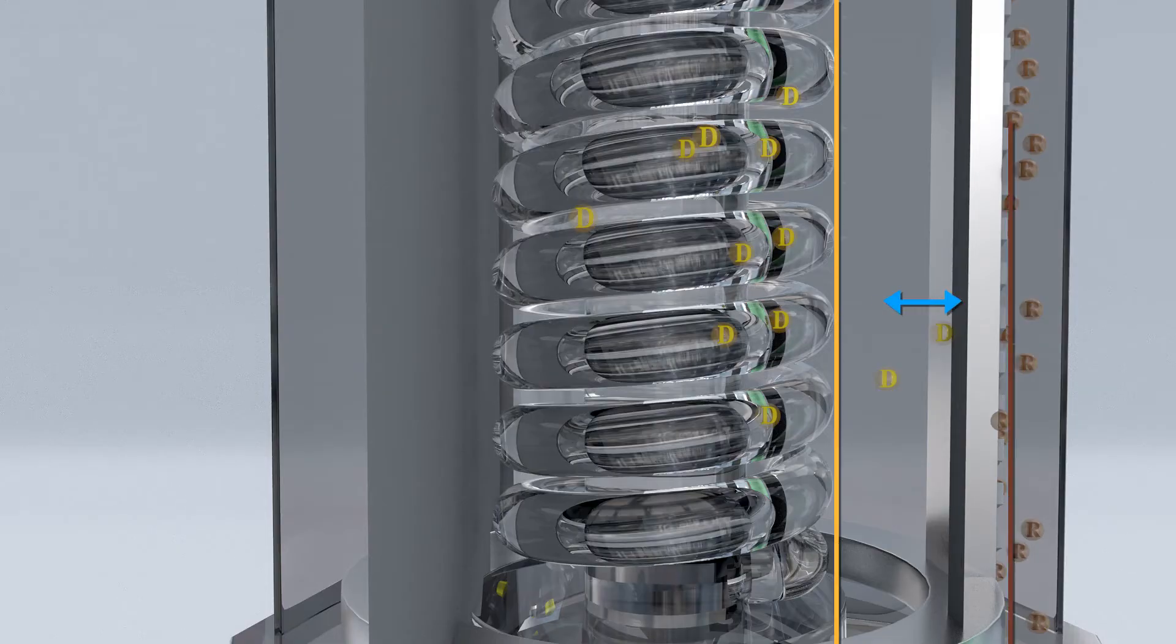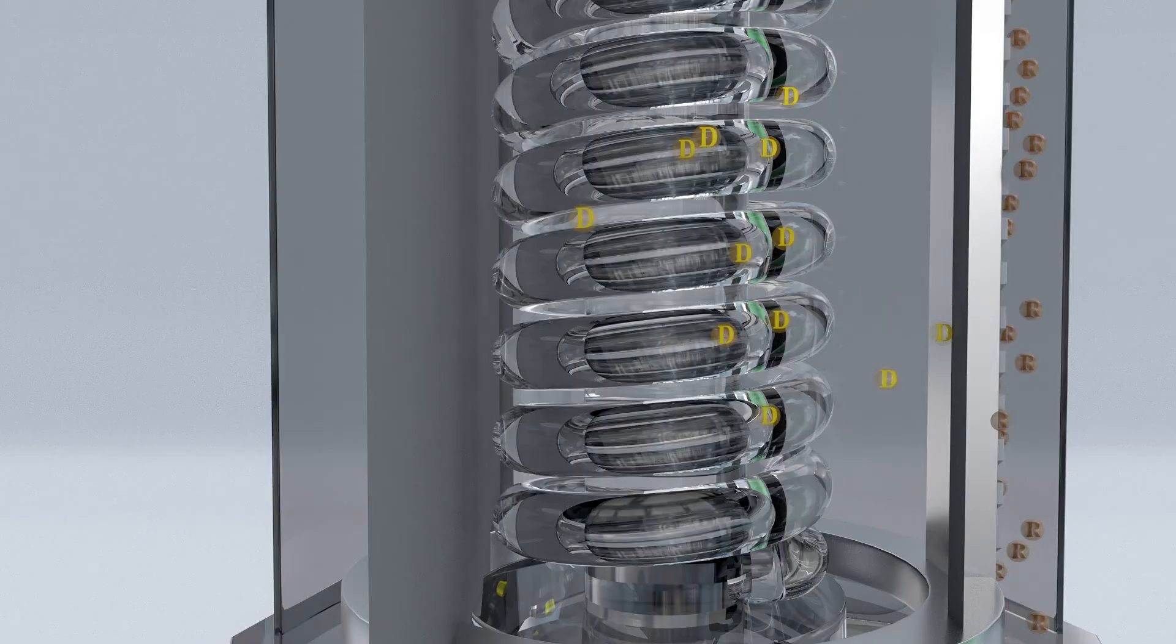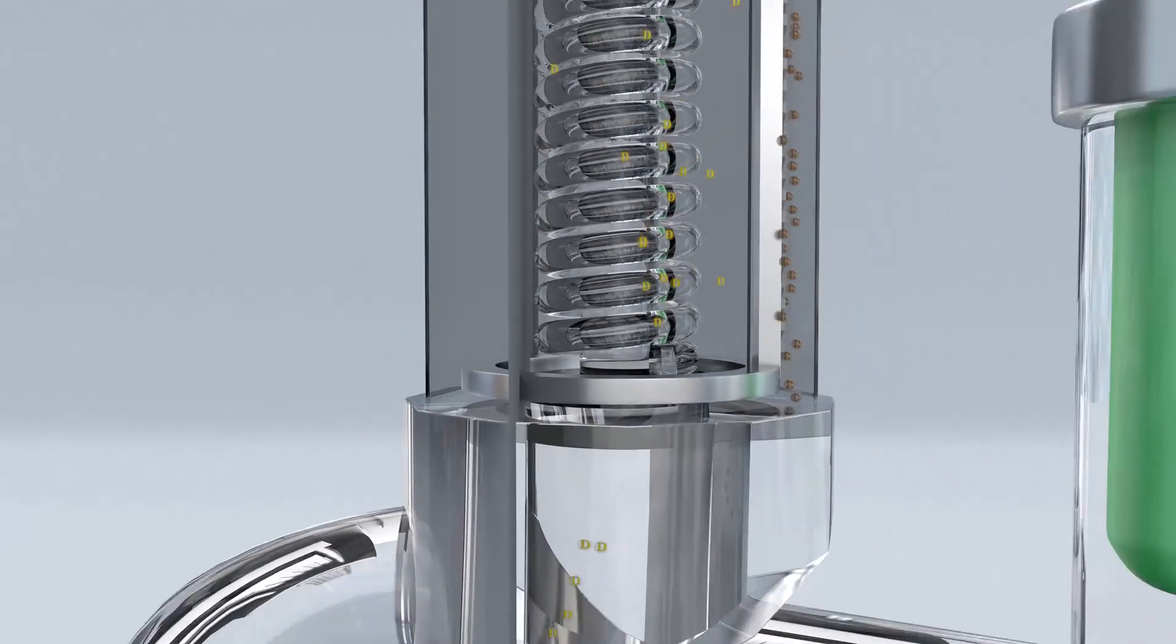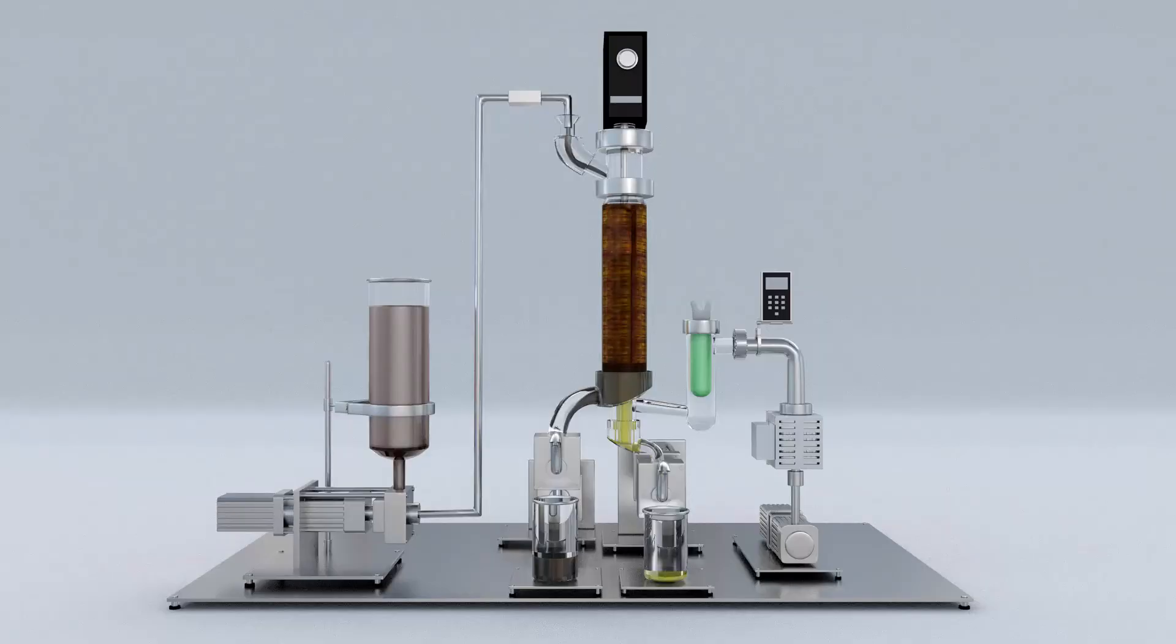The distance between the evaporator surface and the condenser is sometimes referred to as a short path, which helps ensure product quality since the distillate is only in a vapor phase for a short period of time which reduces the chance of breakdown or oxidation.